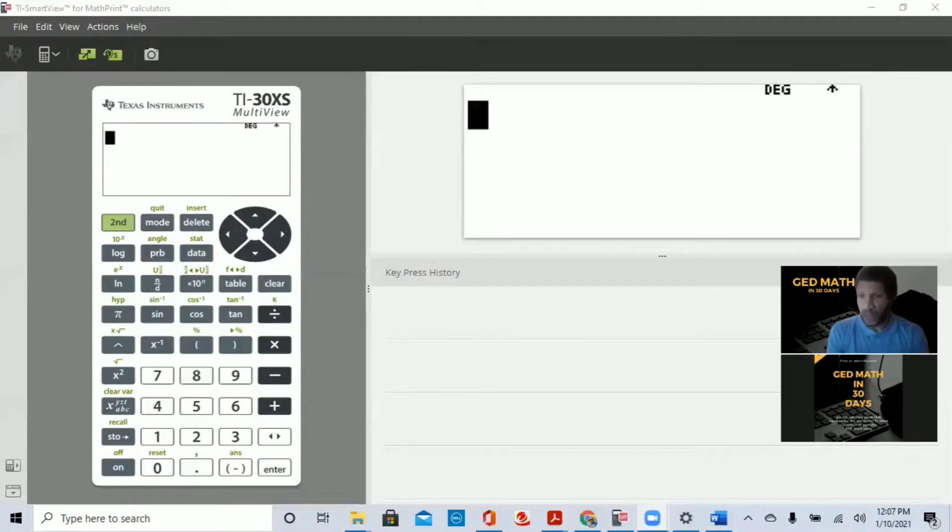Then the second way I would recommend is unit rate. Try to find a unit rate, unit meaning one. And the third way we're going to discuss is to cross-multiply. Now, sometimes we cannot use equivalent fractions. Sometimes, because of decimals or fractions, it's a little bit harder using unit rate, but we can always cross-multiply. So today, I'm going to give you an example.